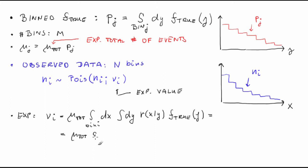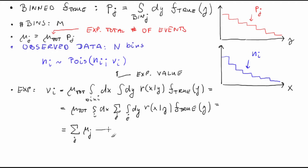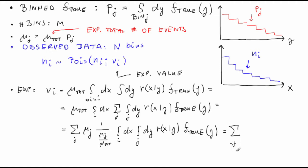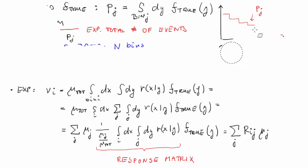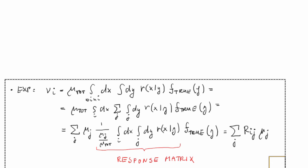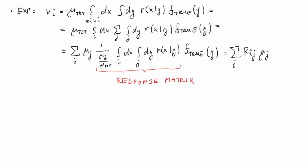This is equal to μ_tot × ∫_{bin i} dx ∑_j ∫_{bin j} dy R(x|y) f_true(y), and this equals the sum over j of μ_j times a certain factor. Here comes the key object for any unfolding method: the response matrix R_{ij}. The meaning of its element R_{ij} is the conditional probability for the observed value x to fall into bin i, given that the true value y fell into true bin j.